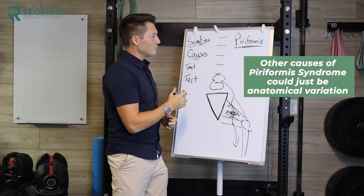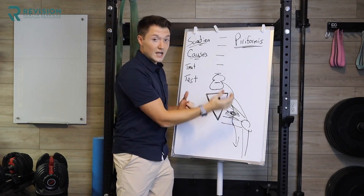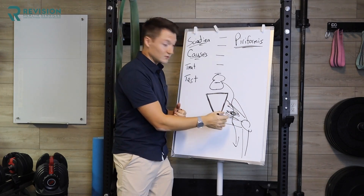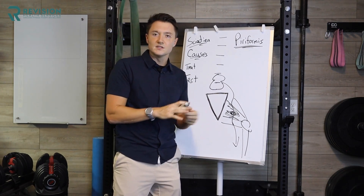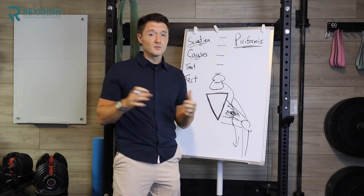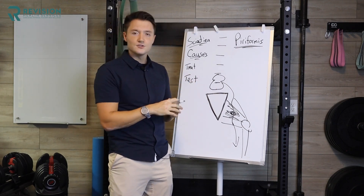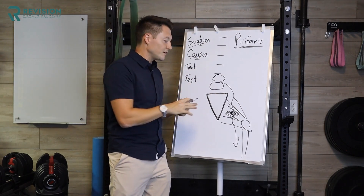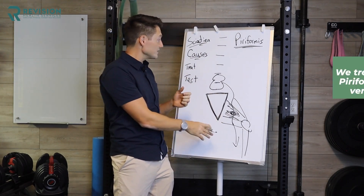Another cause of piriformis syndrome could be anatomical variation — meaning you're genetically built a certain way and that piriformis muscle, over which the sciatic nerve courses, is just different than someone else's. About 10% of people have differences in their piriformis muscles. So whether it be microtrauma, macrotrauma, or anatomical variations, those can be your causes of piriformis syndrome.